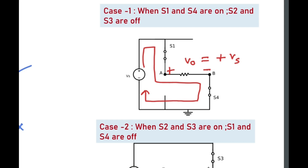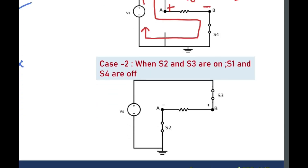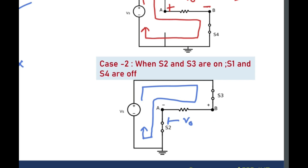Now let's see what happens when S2 and S3 are conducting and S1 and S4 are kept open. When S2 and S3 are conducting, the current flows through the opposite path. Looking at the AB terminal, the current flows in the opposite direction and the output voltage is of the same magnitude but of opposite polarity compared to the previous case. So in this mode of operation we get the same voltage magnitude but in opposite polarity.